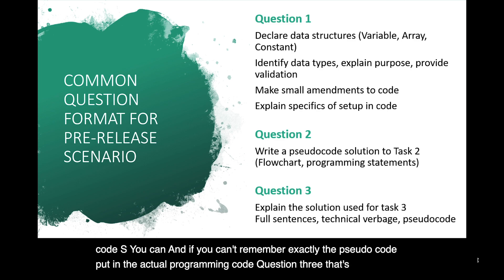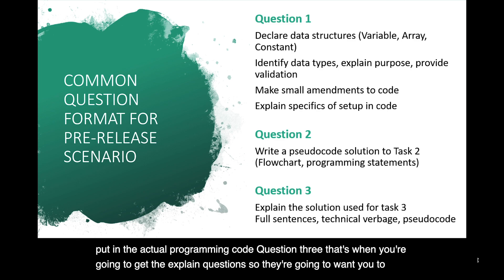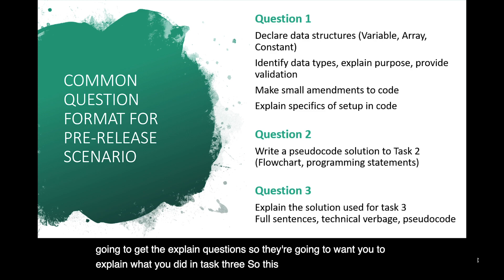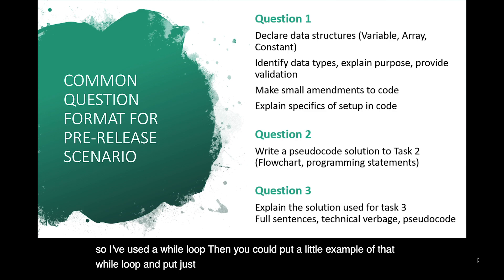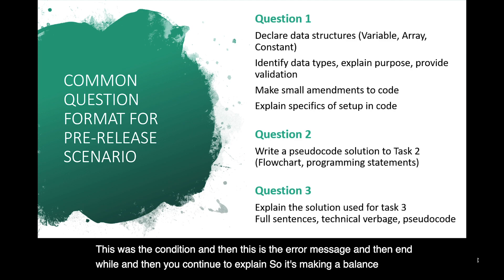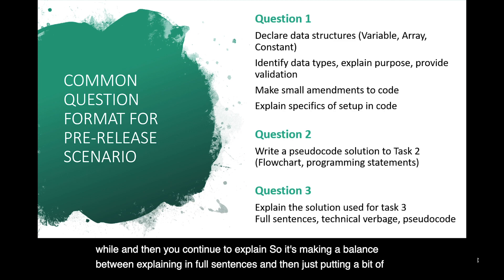Question three, that's when you're going to get the explain question. So they're going to want you to explain what you did in task three. So this is full sentences. As we mentioned before, you're going to explain with technical verbiage or technical vocabulary exactly what it is that you did to solve this problem. And you can support that by using pseudocode. So before we mentioned, I used a validation. The validation may not have to run if a correct input is given. So I've used a while loop. Then you could put a little example of that while loop and put just a small bit of code that shows while this was the condition. And then this is the error message. And then end while. And then you continue to explain. So it's making a balance between explaining in full sentences and then just putting a bit of code in for reference.